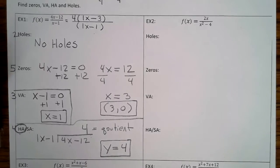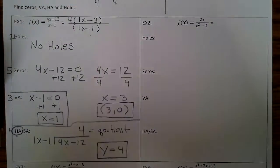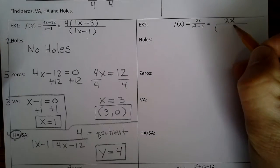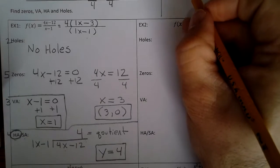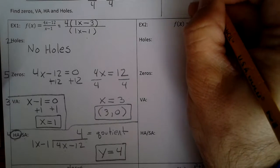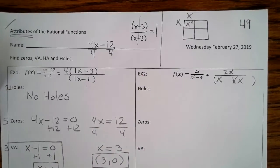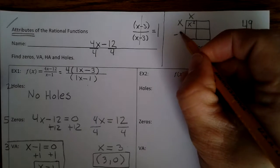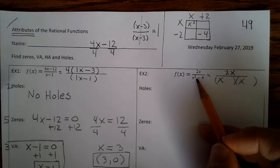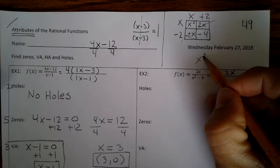Let's take a look at example 2. The first step is to factor. There's nothing in the numerator to factor — you just have 2x. But in the denominator we have what's called the difference of squares, so we can factor that. We draw a box: x and x make x squared. Negative 2 times positive 2 is negative 4, and x times 2 minus 2 times x cancels, leaving x squared minus 4. So our factors are x minus 2 and x plus 2.